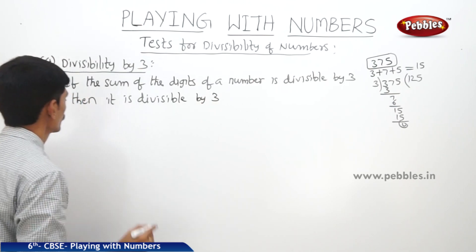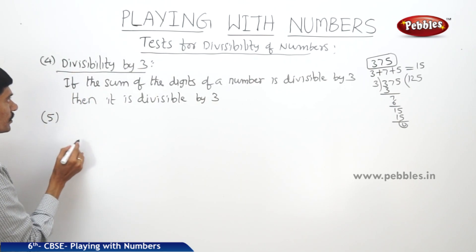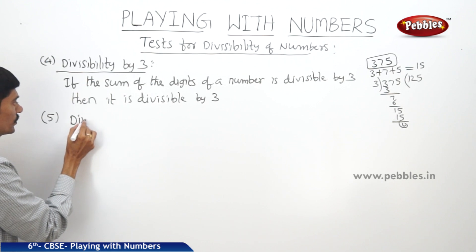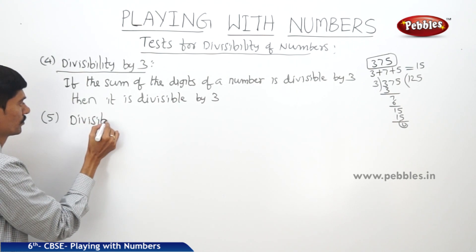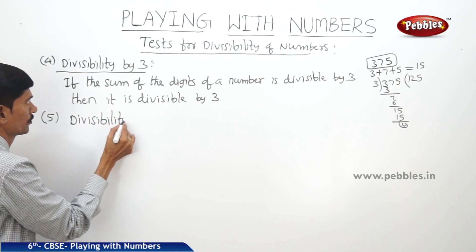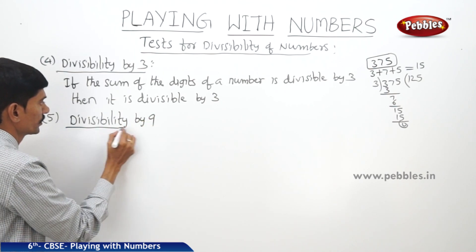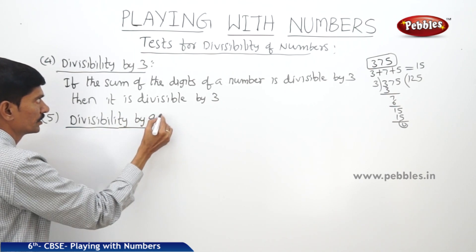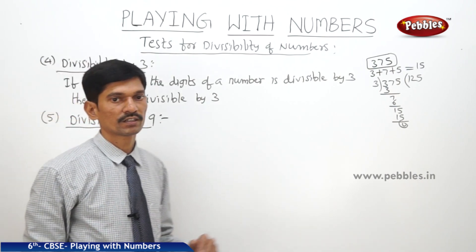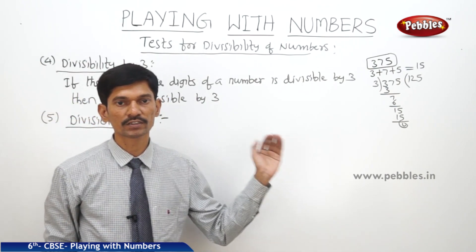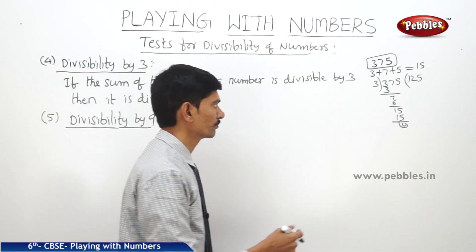Now we can check the divisibility rule for 9. Divisibility by 9: if the sum of the digits of the given number is divisible by 9, then the given number is also divisible by 9. Let us check with an example.